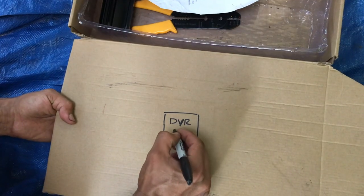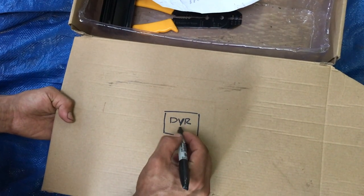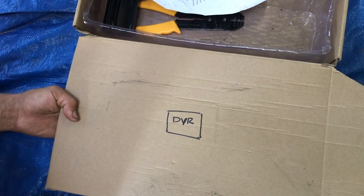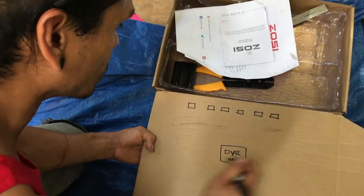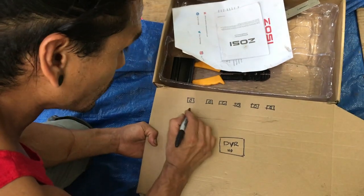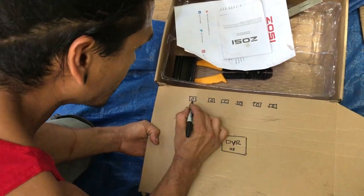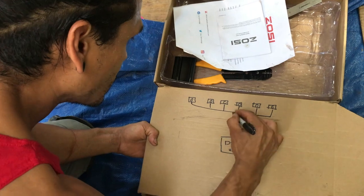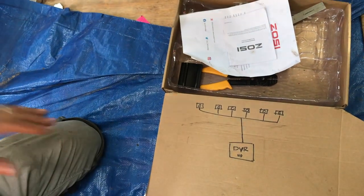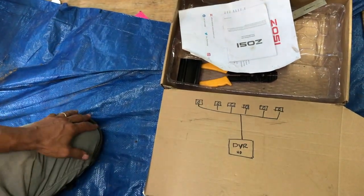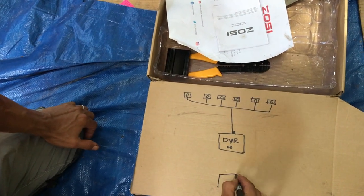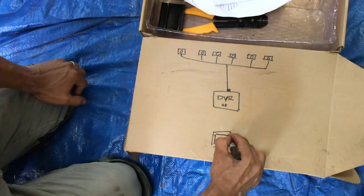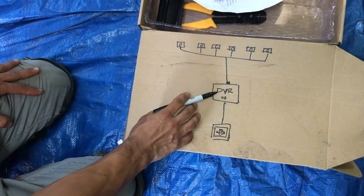The DVR already has a hard drive inside to record the video as it happens. The cameras all go to the DVR, they connect back here. They're all separated. Then you want to see what's going on in the camera, so you connect the monitor. The DVR will give you options.